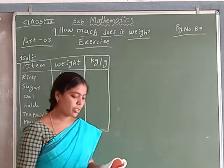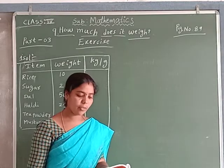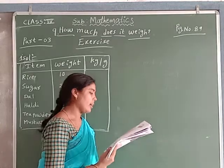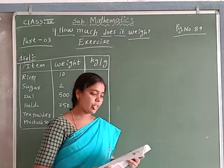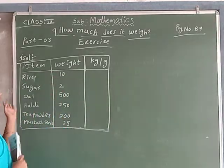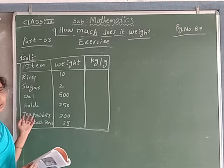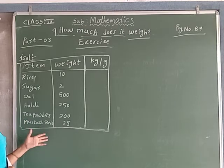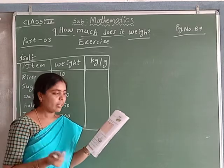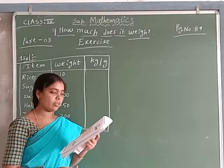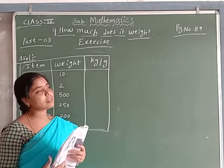First question: Kalyan bought the following items mentioned in his grocery bill. Estimate whether the weight of each item is in grams or kilograms. So Kalyan bought these items only. Here we decide whether each item is measured in grams or kilograms.